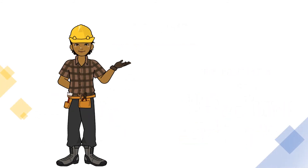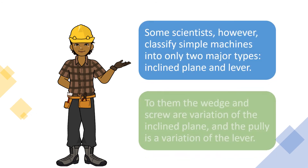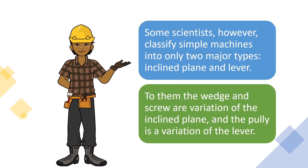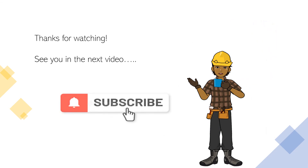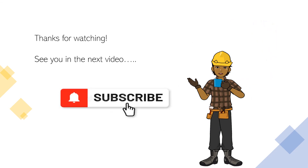Screws. Some scientists, however, classify simple machines into only two major types: inclined plane and lever. To them, the wedge and screw are variations of the inclined plane, and the pulley is a variation of the lever.